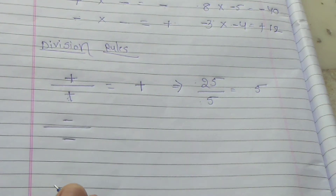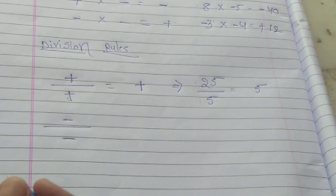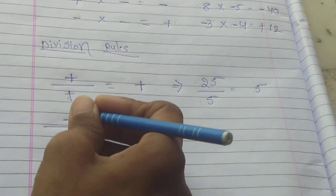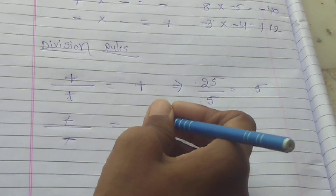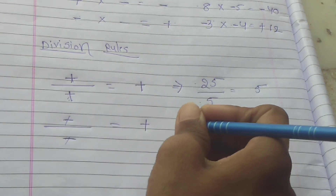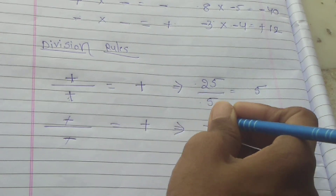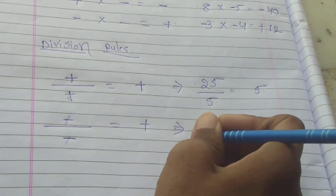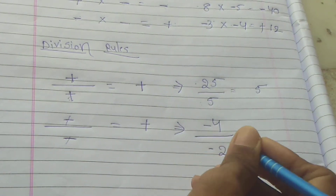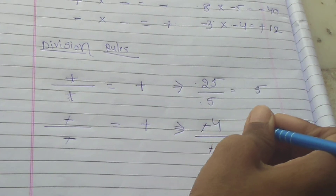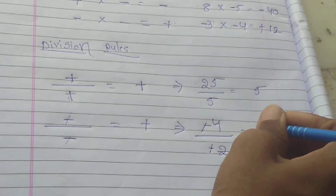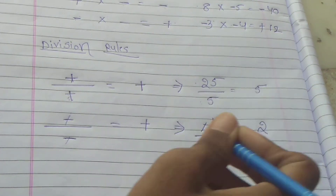Next: minus divided by minus. When minus is divided by minus, the two minuses cancel each other, so the answer is plus. For example, minus 4 divided by minus 2: the minuses cancel, 4 divided by 2 is 2, so the answer is plus 2.